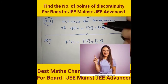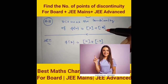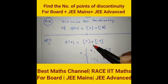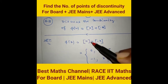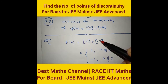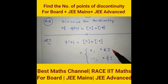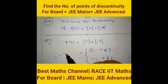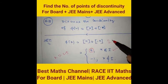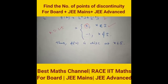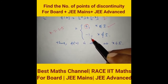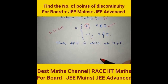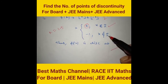Discuss the continuity of f(x) = [x] + [−x]. When x is an integer, e.g., x = 2: [2] + [−2] = 2 − 2 = 0. When x is non-integer, e.g., x = 2.5: [2.5] + [−2.5] = 2 + (−3) = −1. So when x is not an integer, f(x) = −1. Therefore f(x) is discontinuous at all integers — right-hand and left-hand limits differ at integer points.